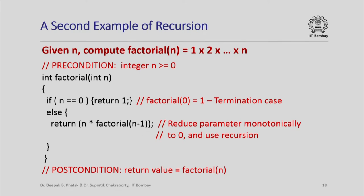Note that given a value of n, we decrement it so that we move towards 0, and 0 is the termination case. So the recursive calls are changing the parameters in such a way that we monotonically move towards the termination case.